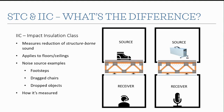For an IIC rating, we use a standardized impact source called the tapping machine. It has five little weights — 500 grams each — dropped from about an inch and a half, so it's not a very hard impact. They operate on a cam or with electromagnets, just tapping repeatedly on the floor, and you measure how loud it is down below. For both STC and IIC, the higher the number the better — more sound reduction for STC, quieter space below for IIC.